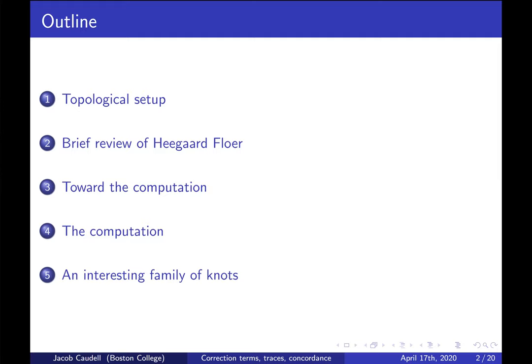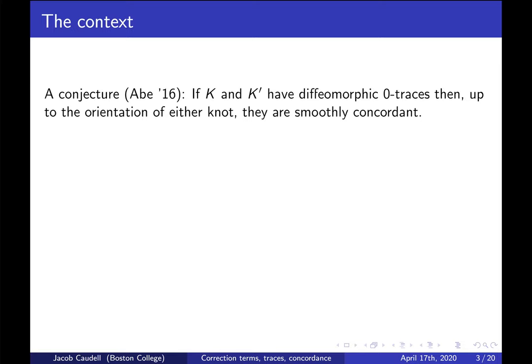There's somebody else attached to this conjecture that I forgot to look up, sorry. The conjecture is that if K and K' are knots in S³ that have diffeomorphic zero-traces, then up to the orientation of either knot they are smoothly concordant.